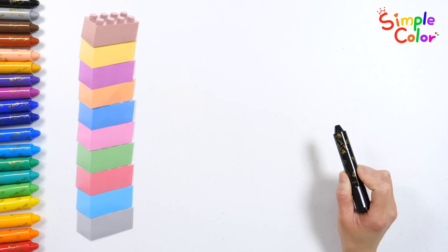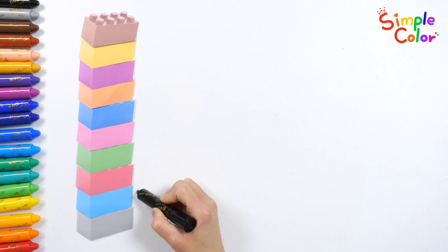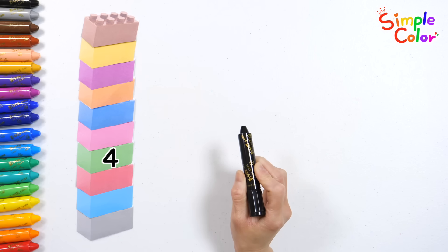Here's a quiz. Let's see if you can answer. Which number from the bottom is the green block? One. Two. Three. Four. The answer is fourth.